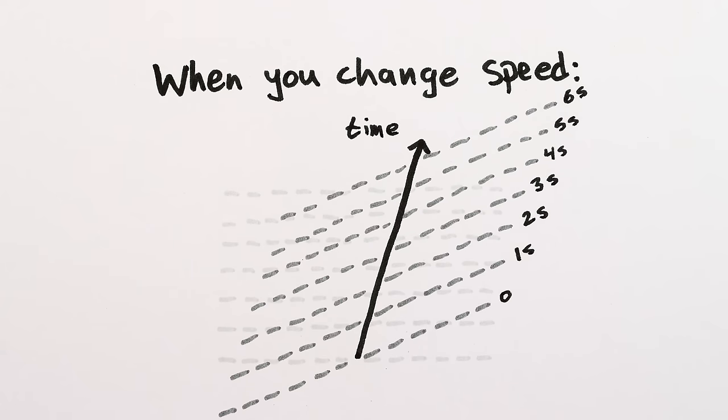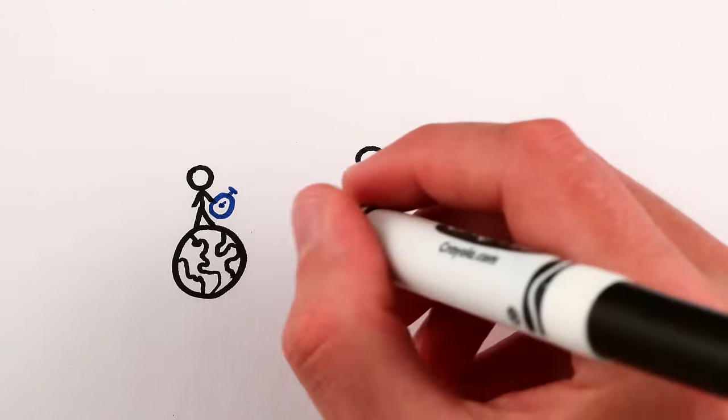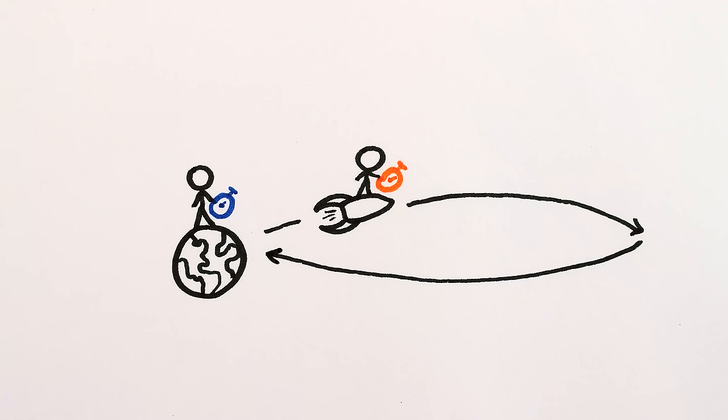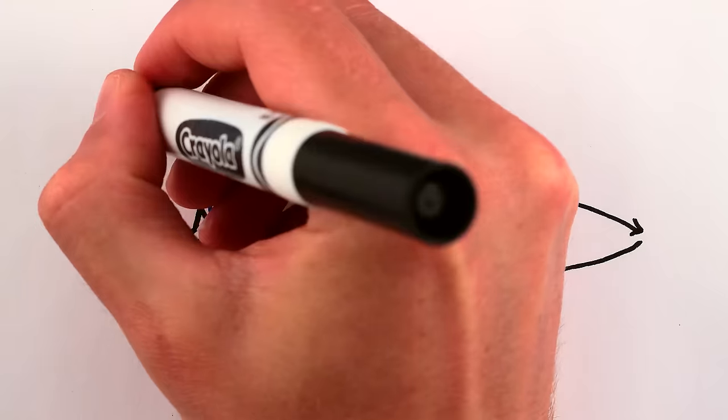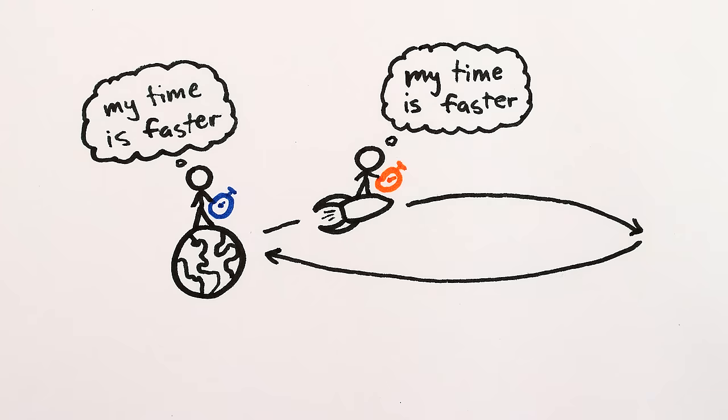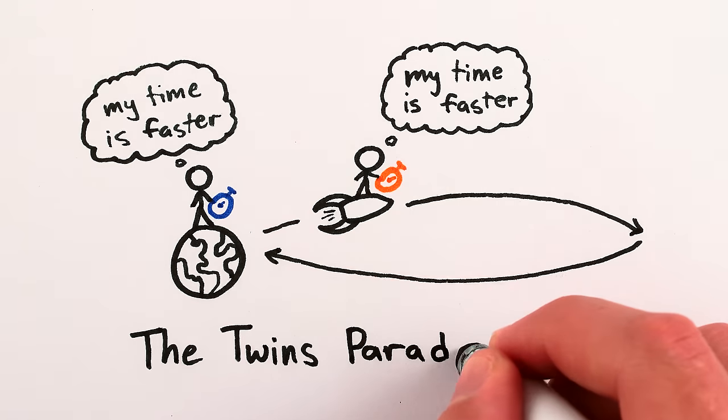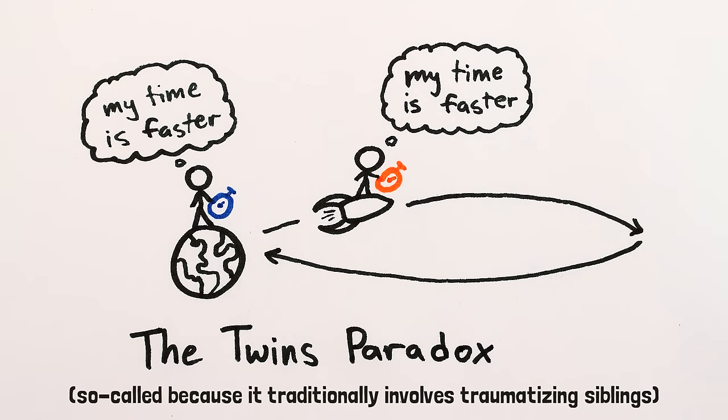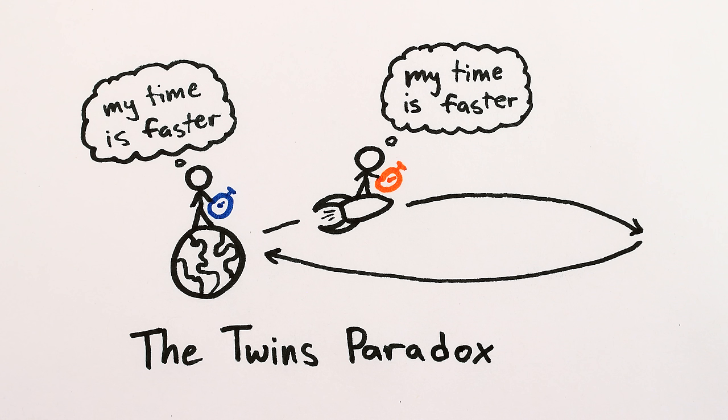However, there's still an unanswered question. What if I stay on Earth, and you go off into space at high speed, and then come back? Will one of us have actually aged more, or will we both have aged the same amount, despite constantly thinking the other was aging less? This conundrum is called the Twins Paradox, and I'll explain the solution to it in my next video. But in the meanwhile, can you use rotating time to figure out why the Twins Paradox isn't a paradox?